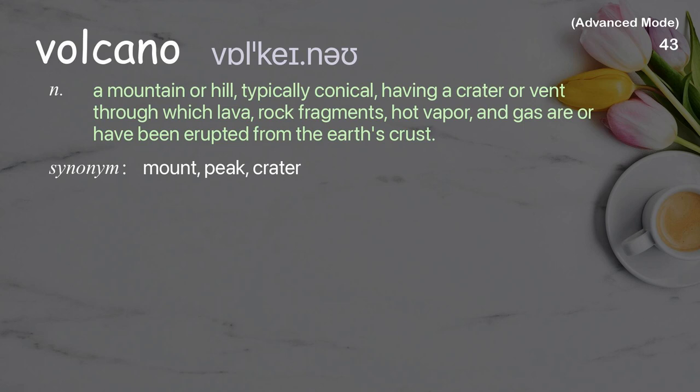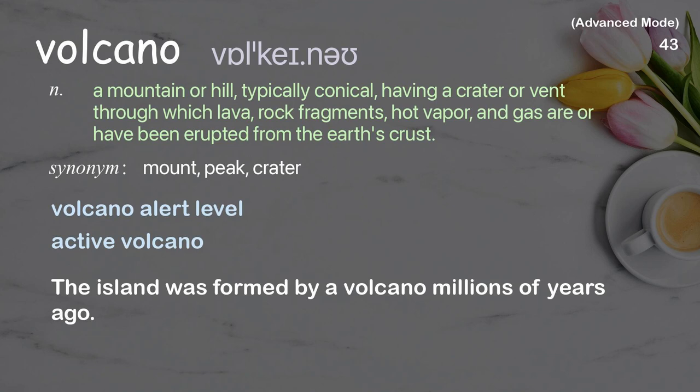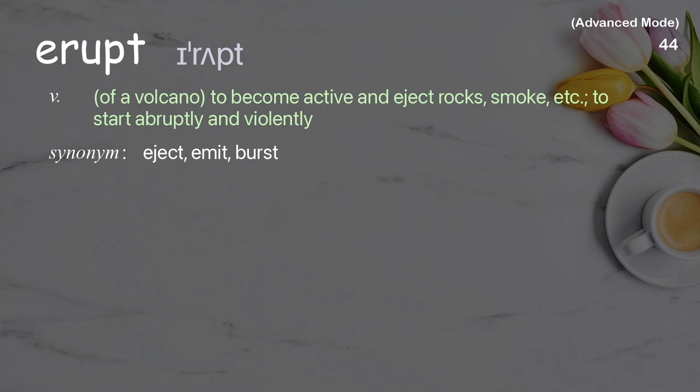Volcano: A mountain or hill, typically conical, having a crater or vent through which lava, rock fragments, hot vapor, and gas are or have been erupted from the Earth's crust. Examples: Volcano alert level, Active volcano. The island was formed by a volcano millions of years ago.